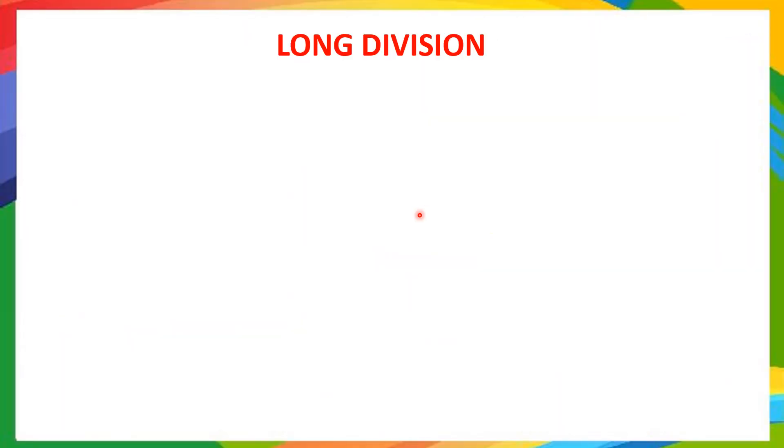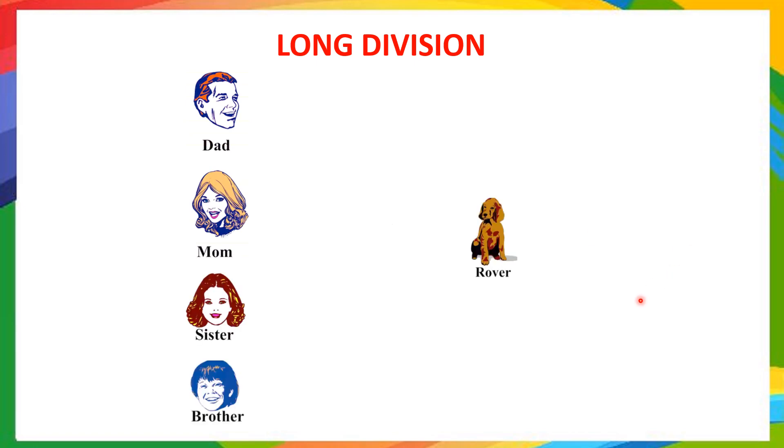Let's see the mnemonic. It is dad, mom, sister, brother and rover. You can repeat along with me once. Dad, mom, sister, brother and rover.